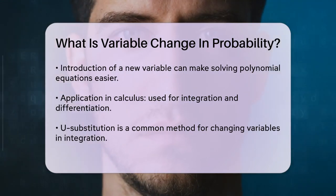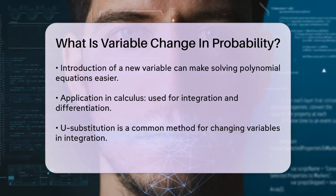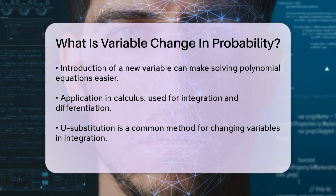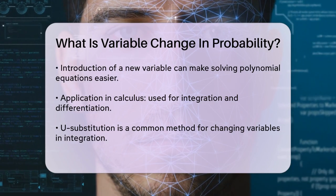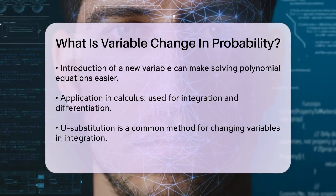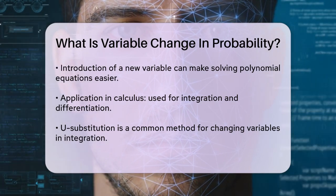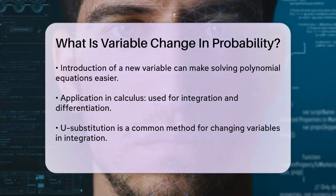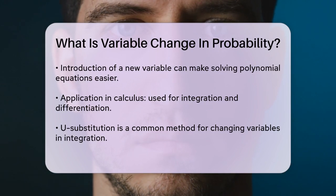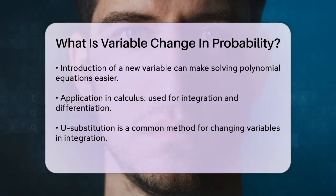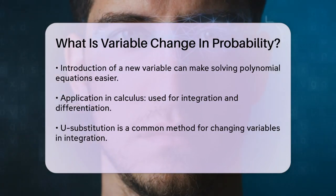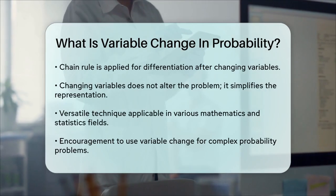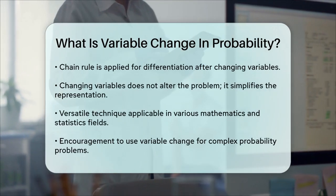In calculus, this technique is also used for integration and differentiation. When integrating a function, you might use a substitution method — often referred to as u-substitution — to change the variables and make the integral easier to solve. Similarly, for differentiation, you can use the chain rule after changing the variables to simplify the process.